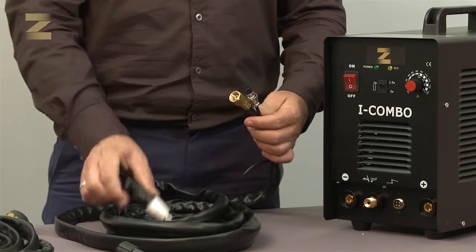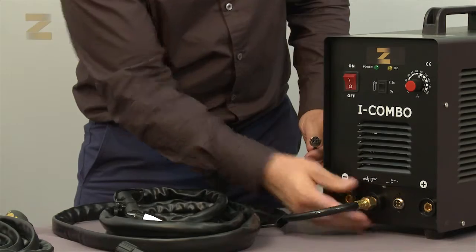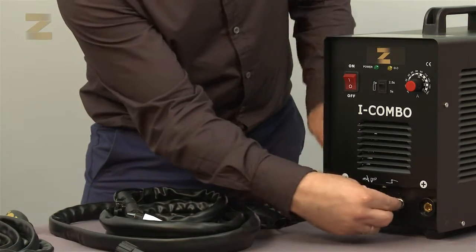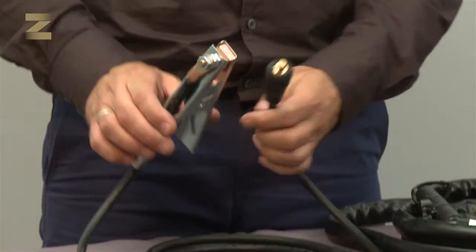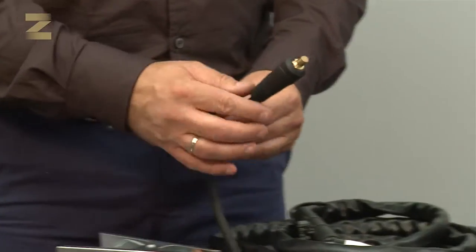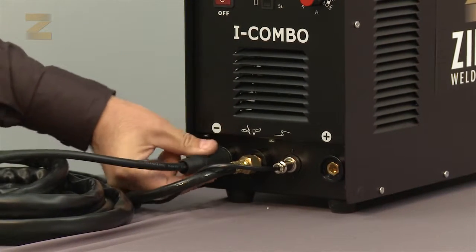Connect the cutting handle to the air inlet on the panel and the electrical plug to the corresponding socket. And the earth connection handle is connected to the negative connector. You are now ready to cut.